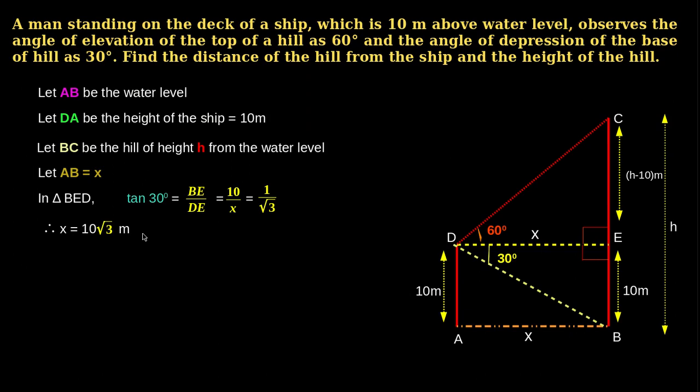To find the height of the hill, H, we have to find the height CE. We can calculate the height H by adding BE and CE. To find CE, consider triangle CED.